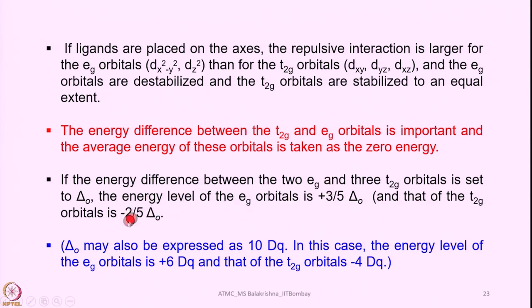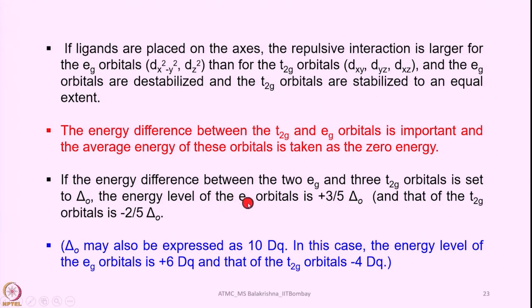The energy level of the eg orbitals is +3/5 Δo and that of the t2g orbitals is -2/5 Δo. Δo may also be expressed as 10Dq, in which case the energy level of the eg orbitals is +6Dq and that of the t2g orbitals is -4Dq. This is how crystal field stabilization energy is defined.